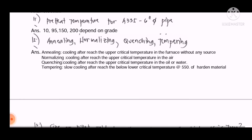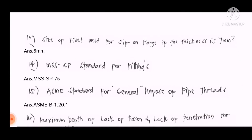Question number thirteen: What is the size of a fillet weld for a slip-on flange if the thickness is 7 mm? The answer is 6 mm.